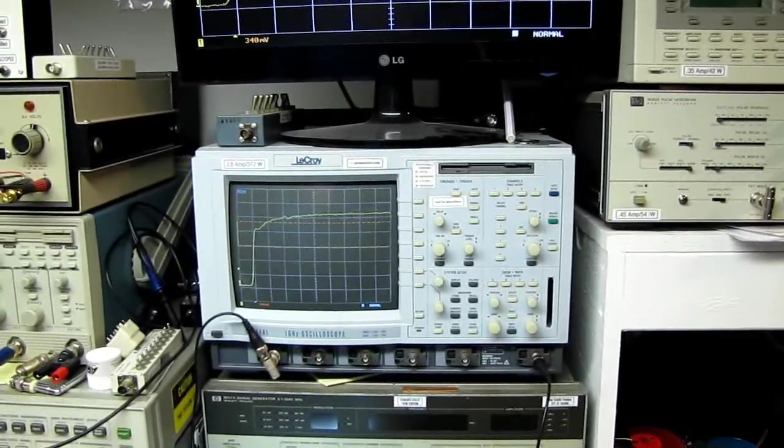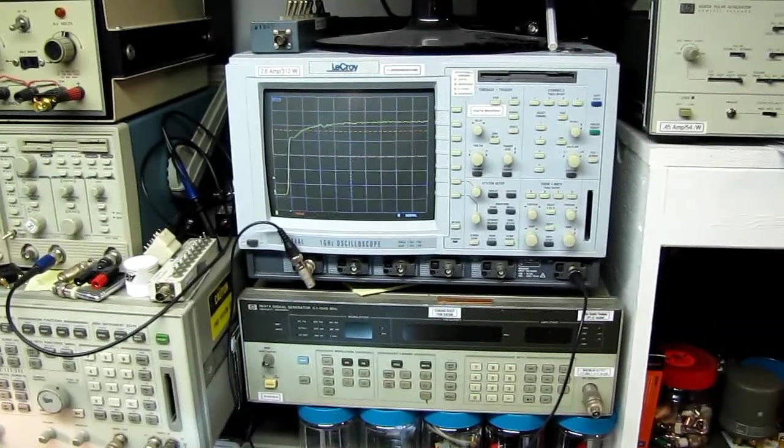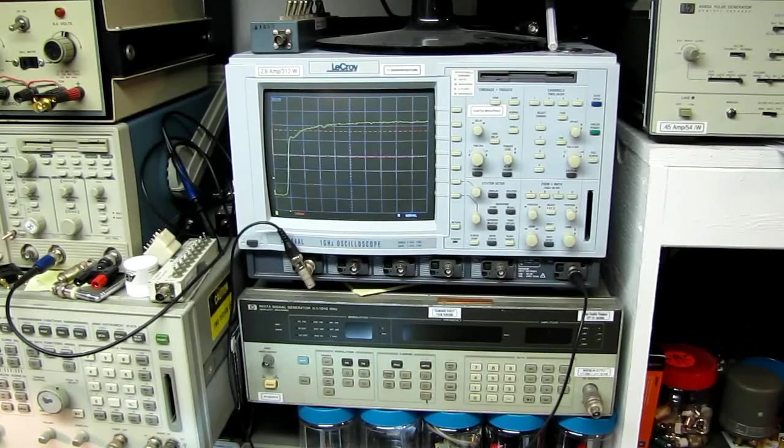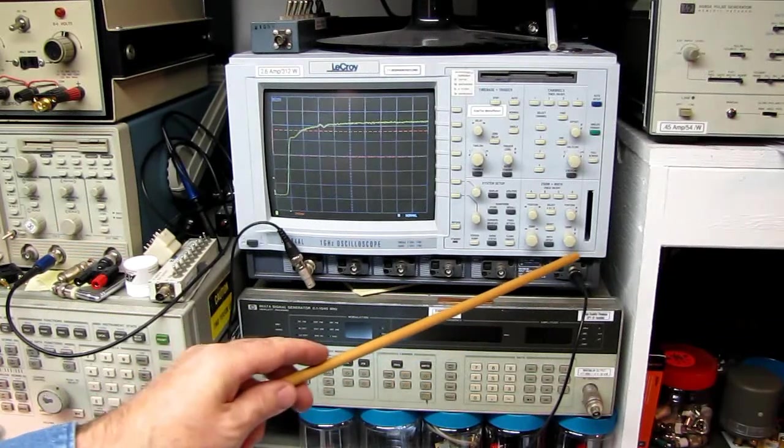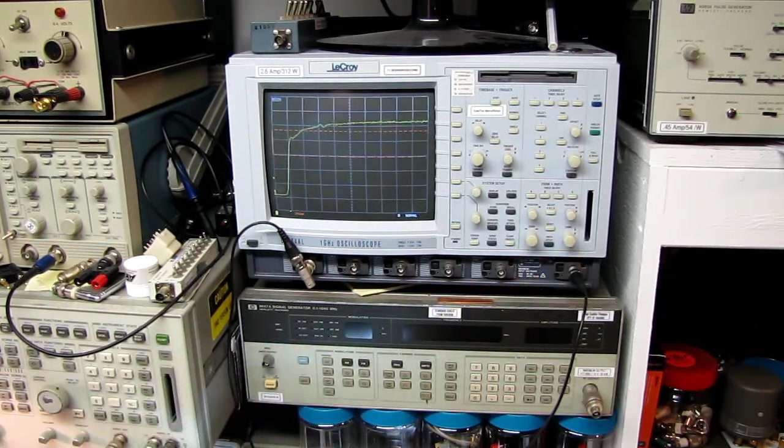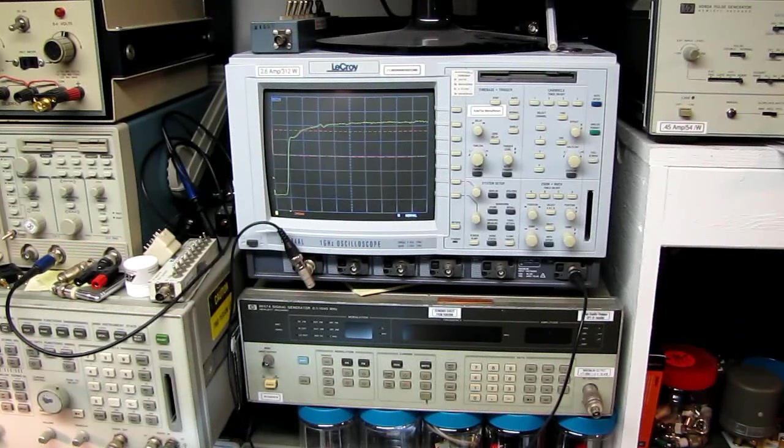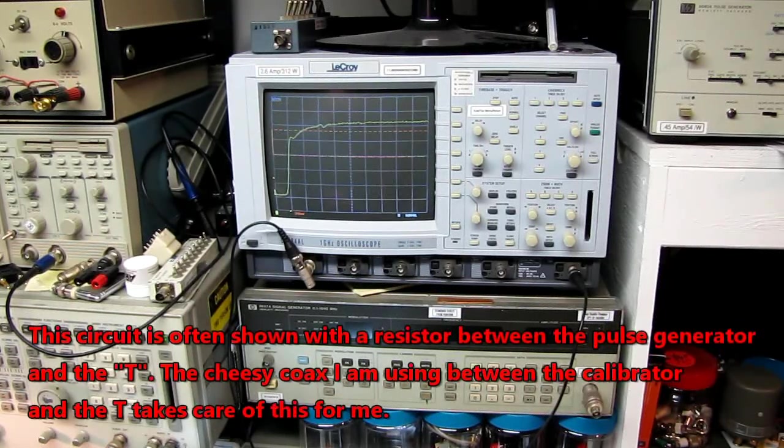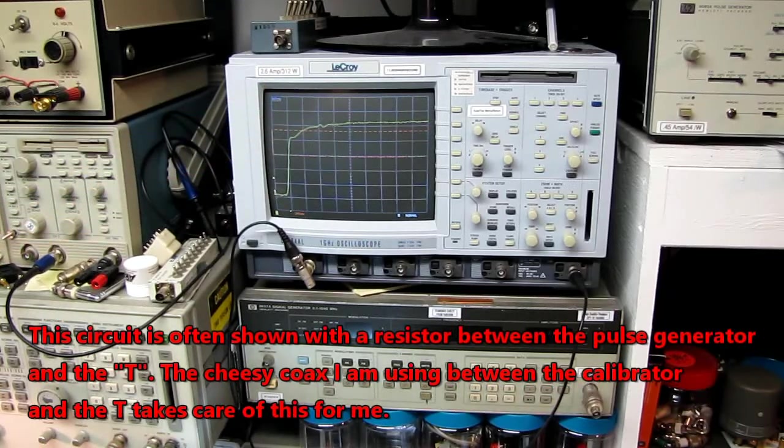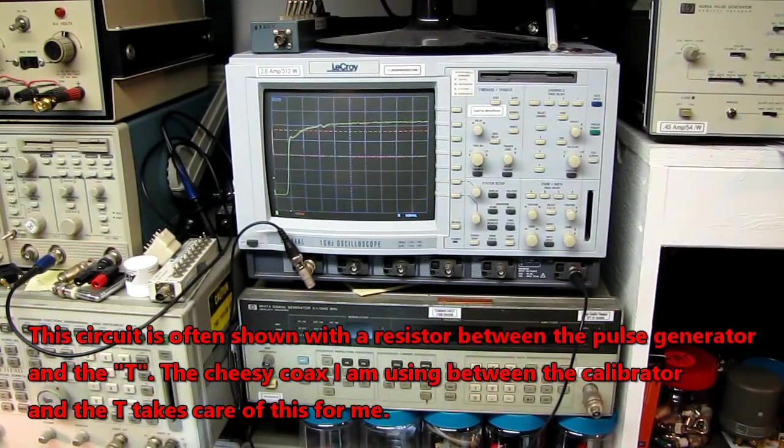What you need to measure your impedance is a pulse generator with a fast rise time and a halfway decent scope. Now the calibrator on this scope has a rise time of about 700 picoseconds because it's a one gigahertz oscilloscope. It needs to be able to check one gigahertz probes fairly well, so the calibrator has a really fast rise time.